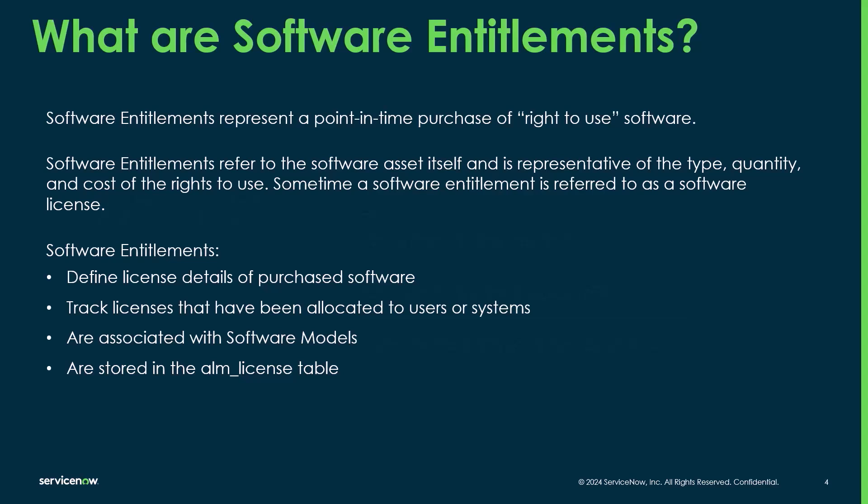So what is a software entitlement? Software entitlements represent that point-in-time purchase of a right to use the software. When you purchase an entitlement, you don't actually own the software itself — you're purchasing a right to use that software. Software entitlements refer to the asset itself, and it represents the type, the quantity, the cost, and the right to use. Software entitlements can also be referred to as software licenses in a lot of cases.